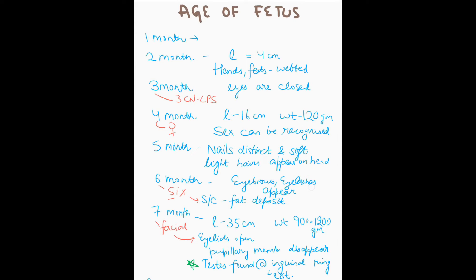After the fifth month, the length formula changes: length equals month number multiplied by five. So at seven months, length is 35 centimeters and weight is 900 to 1200 grams — approximately one kilogram. At seven months, the facial nerve (7th cranial nerve) begins to act, so the eyelids open. The pupillary membrane disappears. The testes are found at the external inguinal ring at the seventh month.